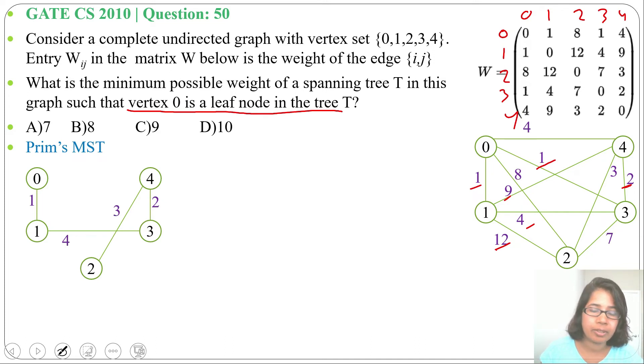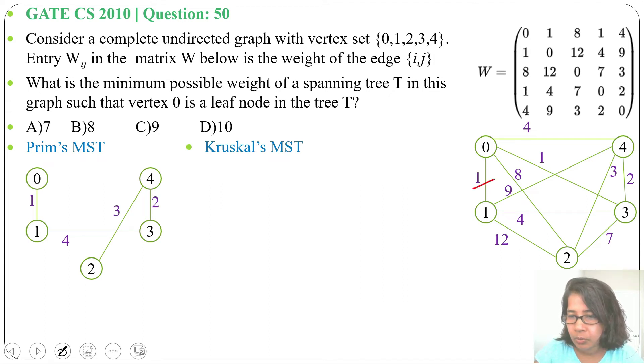First we will choose weight 1. There are two edges having weight 1: 0 to 1 and 0 to 3. We can choose any one. Let me choose 0 to 3. You can also choose 0 to 1.